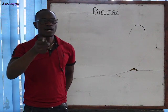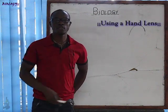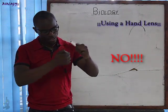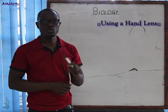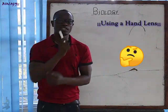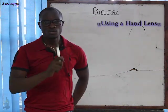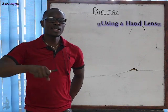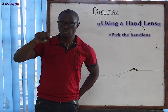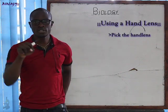Now, how do we use a hand lens? When you get a hand lens, how do you use it? You can use it to examine a lighter, vegetables like skuma wiki, and so on. So, first pick up the hand lens with one hand. Do not hold it with two hands — pick it with one hand.